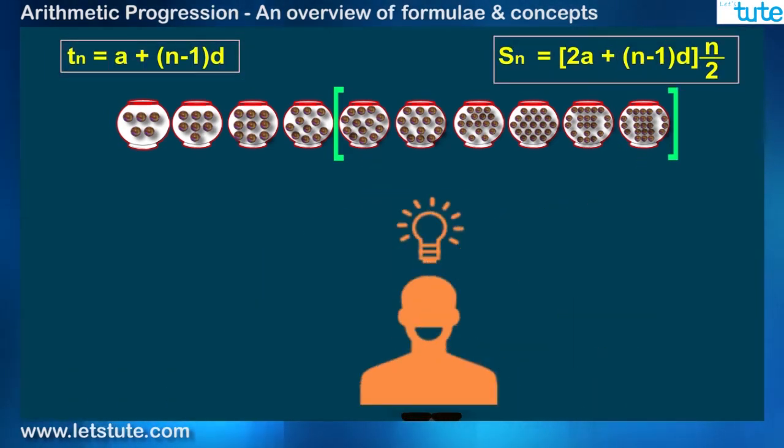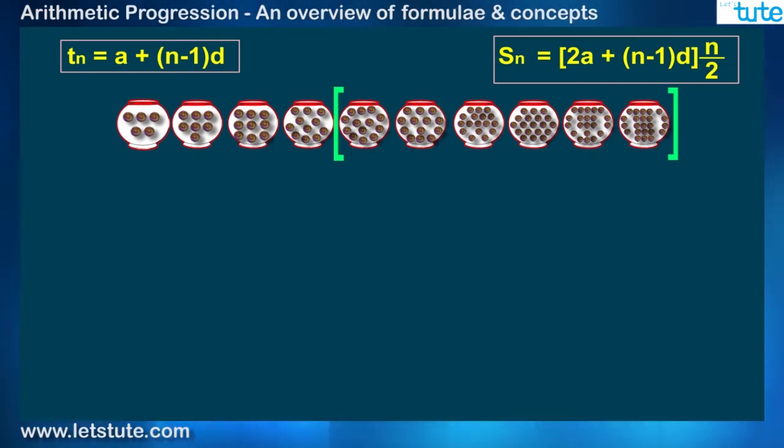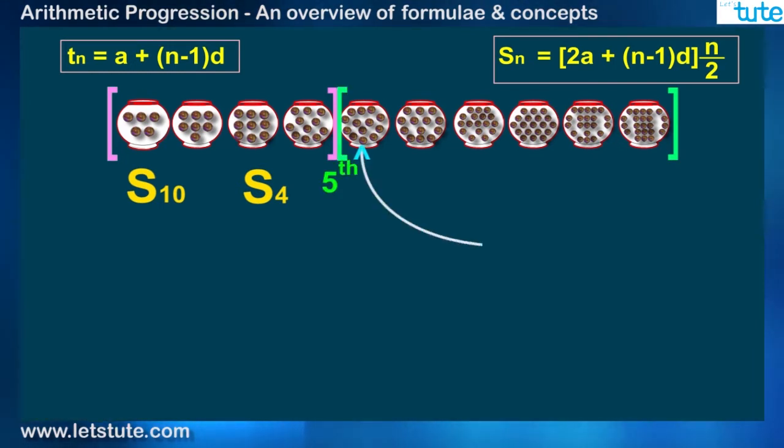Now I will tell you the solution and if I am going wrong then please correct me. What I will do is, I will first calculate S10, which is the sum of marbles in all 10 pots from the first one, and subtract the sum of marbles in the first 4 pots. So I will also calculate S4, therefore the total number of marbles from 5th to 10th pots will be calculated as S10 minus S4.